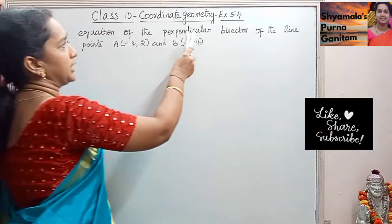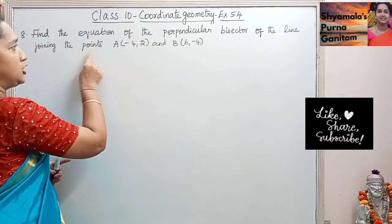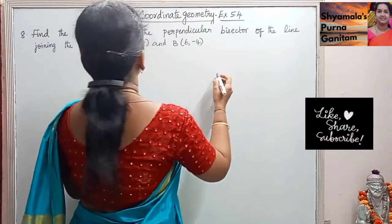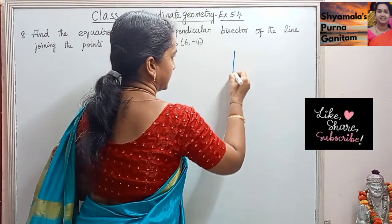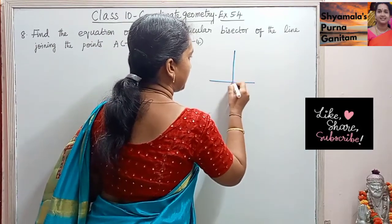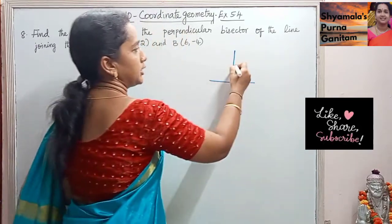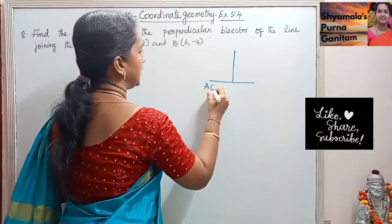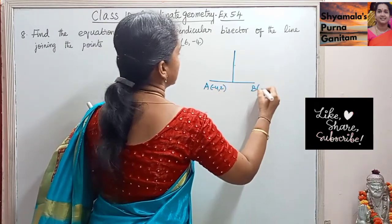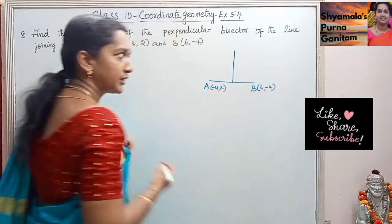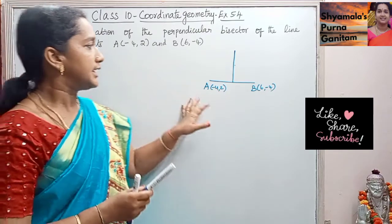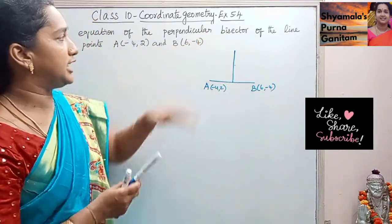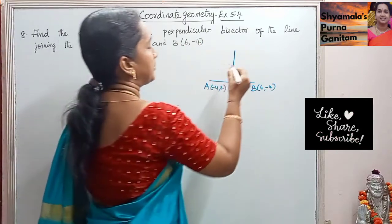Find the equation of the perpendicular bisector of the line joining the points A and B. This is the perpendicular bisector of the line joining A(-4, 2) and B(6, -4). This is the information given.